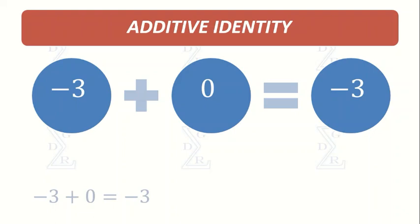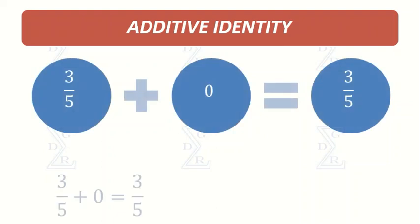Additive identity. The sum of minus 3 and 0 is minus 3, or vice versa. Or the sum of 3 fifths and 0 is 3 fifths, or vice versa. Like many examples.